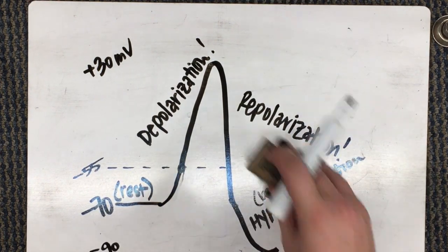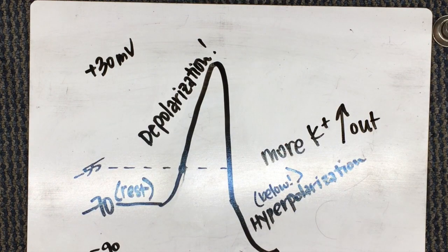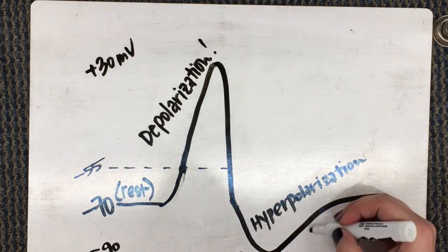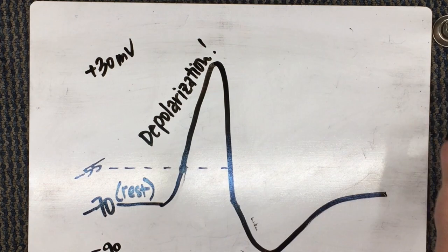Step four, hyperpolarization, meaning going below that original charge, is when more potassium leaves the cell. Finally, the sodium-potassium pump kicks everything back into place.